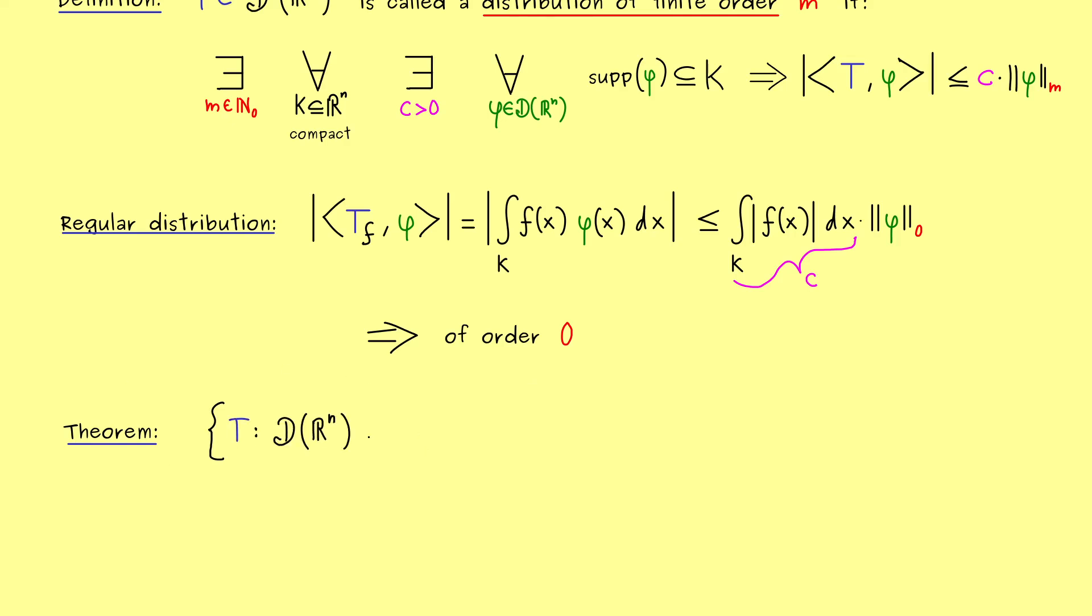However, for this nice theorem I also want to allow that the distributions are complex valued. So they are allowed to map a test function to a complex number. But you already know, this does not change anything in any definitions. So the only thing is, either we have the absolute value in the real numbers or in the complex numbers. However, all formulas look exactly the same.